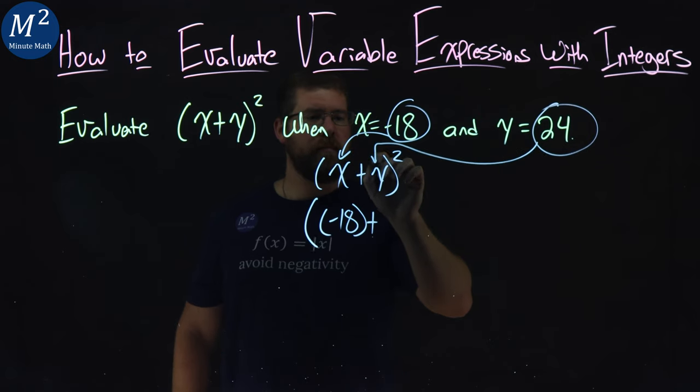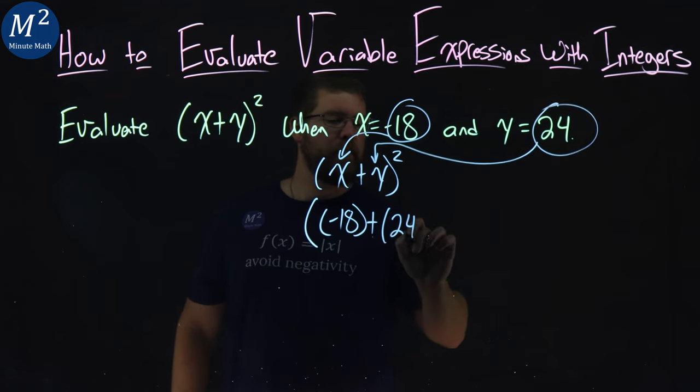I'm going to do the same thing. 24 goes in for the y. We have a lot of parentheses here. Then we all square that.